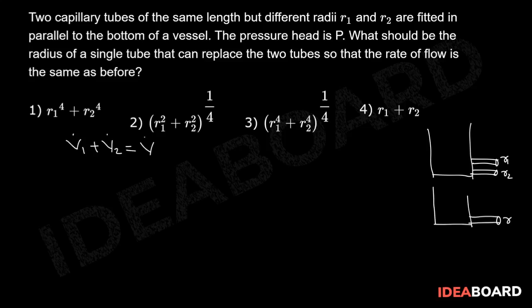Now Poiseuille's equation gives that the volume flow rate through a capillary tube is V dot equal to delta P pi R to the power of 4 divided by 8 eta L.